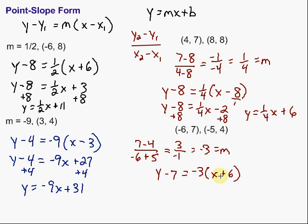Then if I want to write that in slope-intercept form... Again, remember, if you're asked to write it in point-slope form, we're done. If you're asked to write it in slope-intercept form, then we need to continue and solve for y. So y minus 7 equals negative 3 times x is negative 3x. Negative 3 times 6 is minus 18. Then add 7 on both sides to get that y by itself. Plus 7 on both sides, y equals negative 3x. Negative 18 plus 7 would be negative 11.